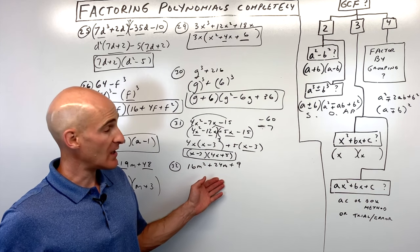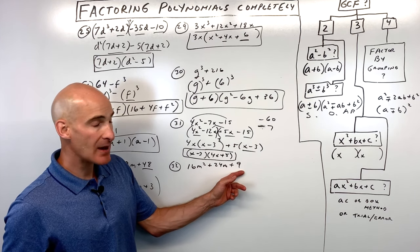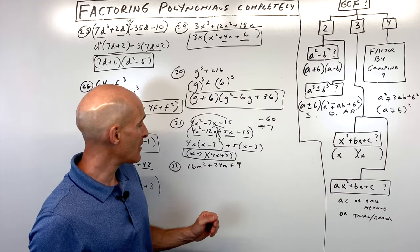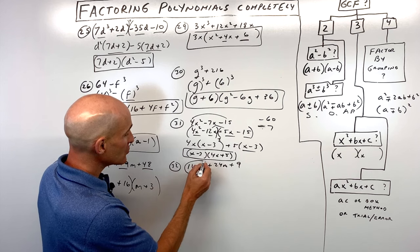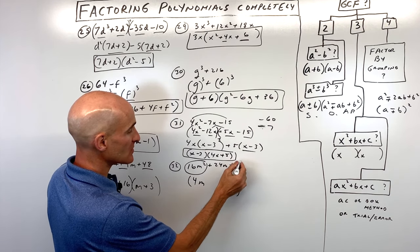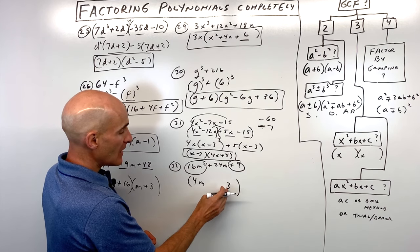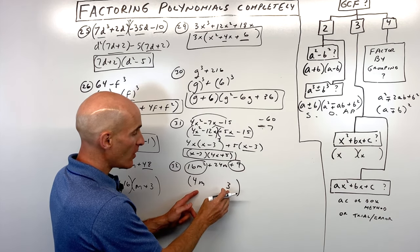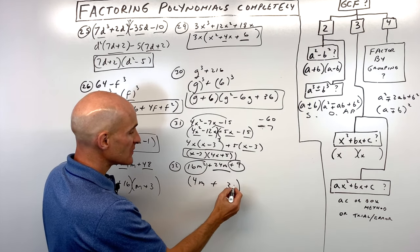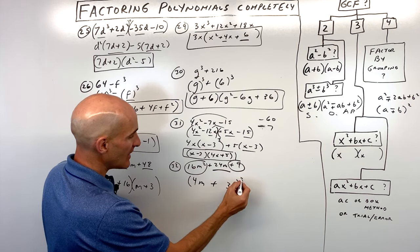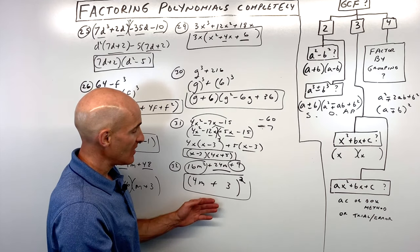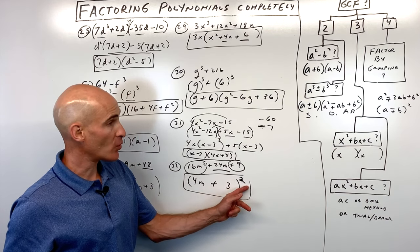Number thirty-two is a trinomial, no greatest common factor, leading coefficient not 1. What jumps out is that the first term is a perfect square — 4m times 4m — and the last term is a perfect square — 3 times 3. Then 4m times 3 is 12m, doubled is 24m, matching the middle term. So this is the perfect square trinomial pattern: 4m plus 3 quantity squared. If it were minus 24m, this would be minus 3.